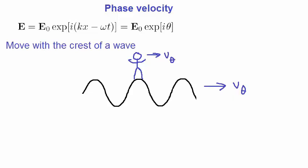That means, from our perspective, the phase angle θ of the wave doesn't change. So the rate of change of θ, from our perspective, is zero.